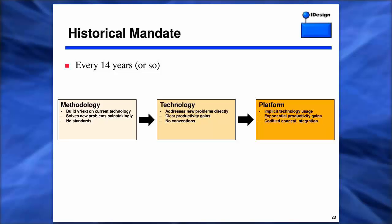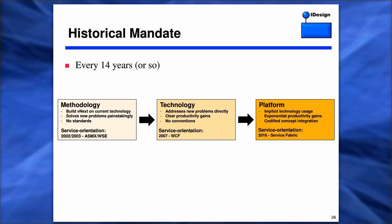Walking through the service orientation era: back in 2002–2003, we had ASMX and WSE — Web Service Enhancements or Extensions. Out of that came a more centralized technology, WCF, in 2007. And then finally the fabric, which implicitly uses these similar techniques and technologies but pushes them down a layer so that the programming experience is much simplified, along with other aspects as we'll see.